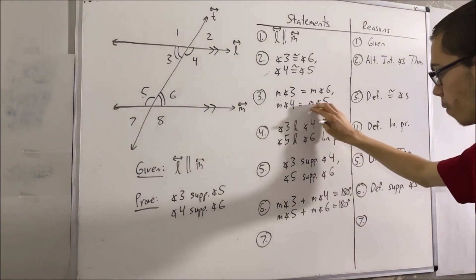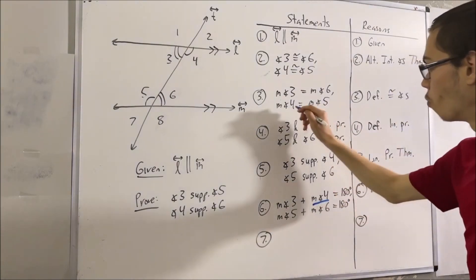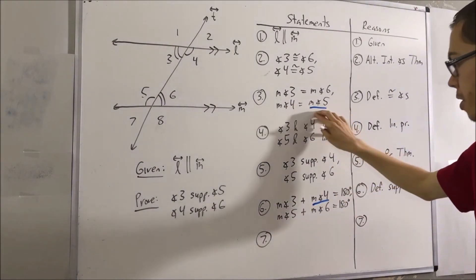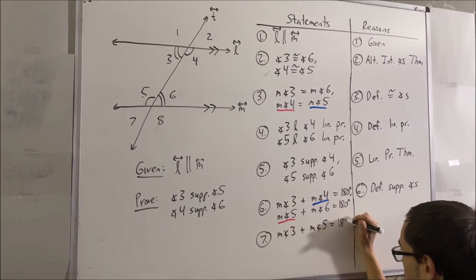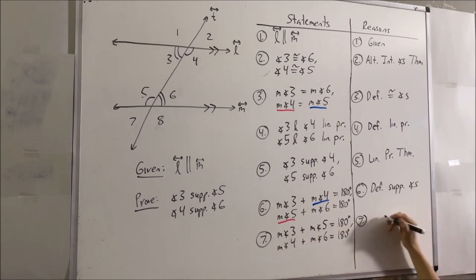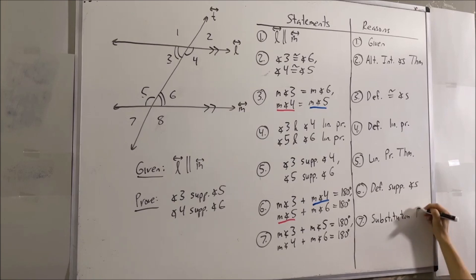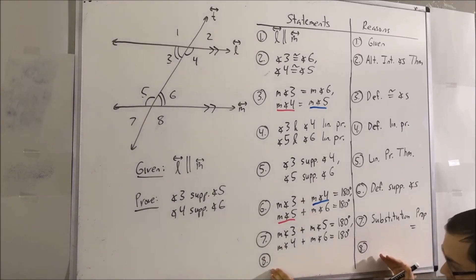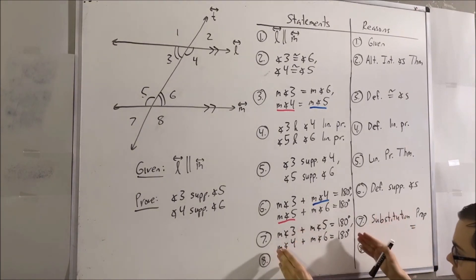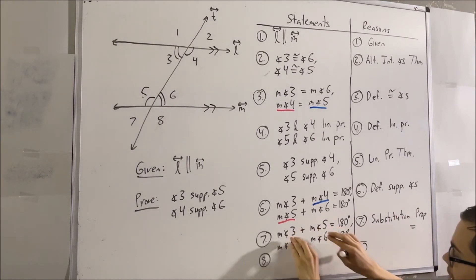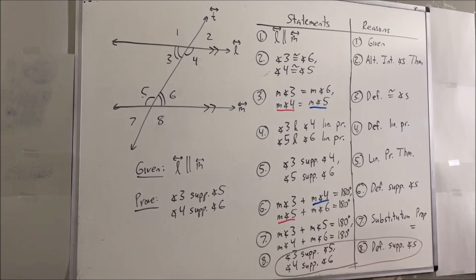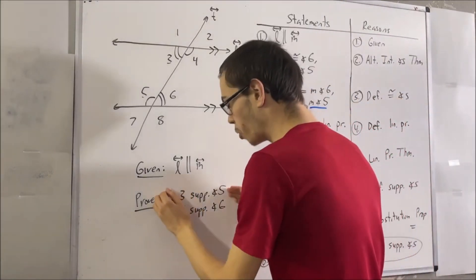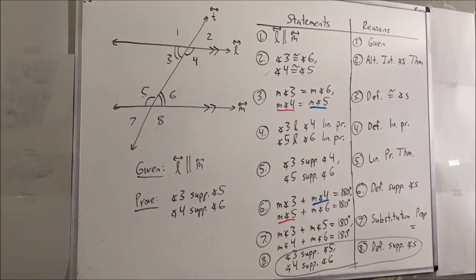Because the measure of angle 4 equals the measure of angle 5, we can replace this measure of angle 4 with the measure of angle 5. And because the measure of angle 4 equals the measure of angle 5, we can also replace this measure of angle 5 with the measure of angle 4. This comes from the substitution property of equality. Now we can use the definition of supplementary angles again to say that angle 3 is supplementary to angle 5, and angle 4 is supplementary to angle 6. We have proven that both pairs of same-side interior angles are supplementary, and that's the whole idea of the same-side interior angles theorem.